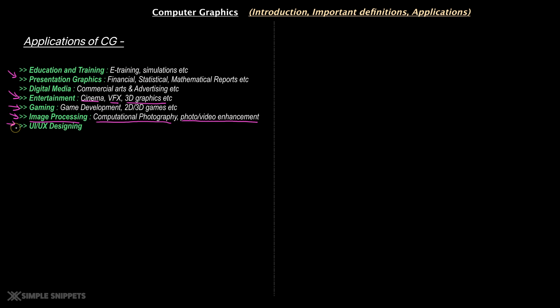Photo editing tools that resolve details and reduce noise are all using computer graphics. You also have UI and UX — the user interfaces you see on Android, iOS, Windows, Apple, etc. — all computer graphics again. If you want to take one thing from this video, understand that computer graphics is pretty much everywhere, and what we're trying to understand is the basics of how these graphics are generated at a very fundamental level. Throughout this course we'll understand different algorithms and concepts.